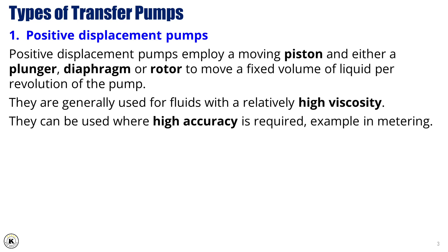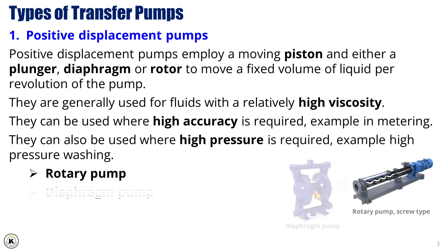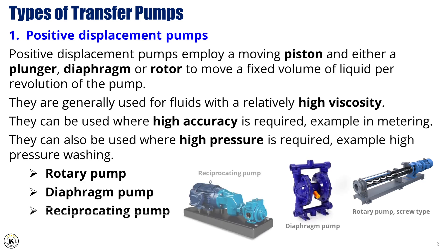Because they can generate high pressure, positive displacement pumps are commonly used in high-pressure applications, such as industrial washing systems. Some common examples include rotary pumps, diaphragm pumps, and reciprocating pumps, each with its own specific advantages depending on the application.